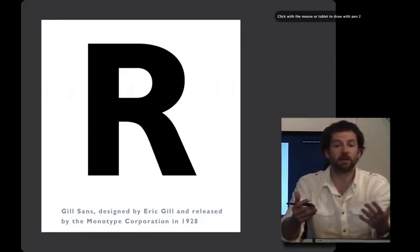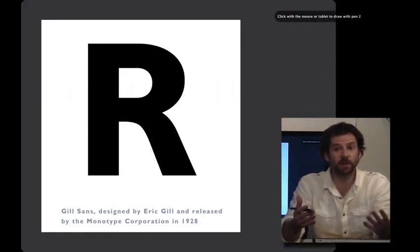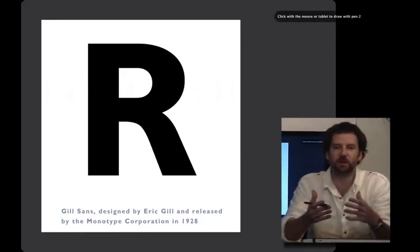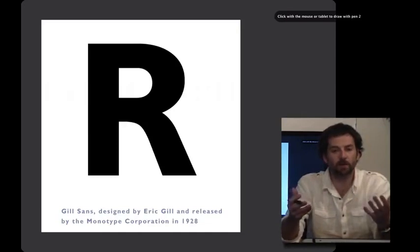Gill Sans was designed by Eric Gill and released in 1928. There's a couple of things that I'd like to point out about this letter right here. One of them is that it has the perceptual characteristic of being consistent weight all throughout.